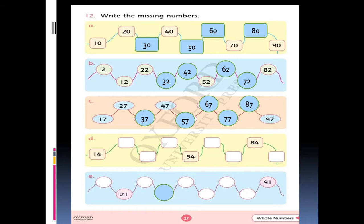Row number D. 14, 24. We are going to add 10 in each number. 24, 34, 44, 54, 64, 74, 84, 94.